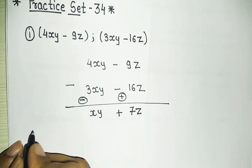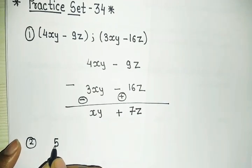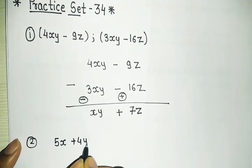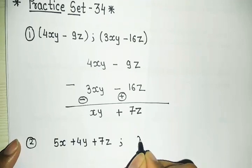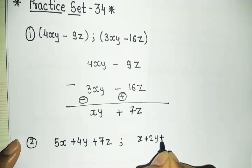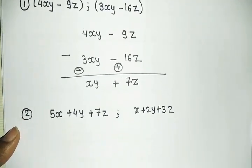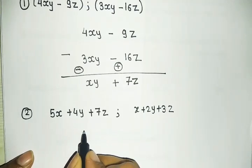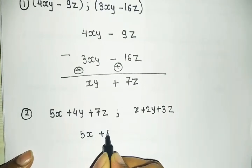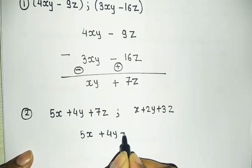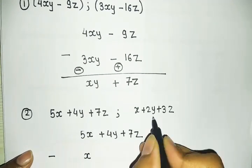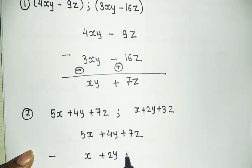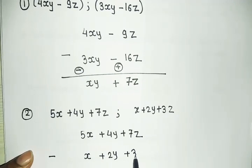My second example: the first expression is 5x plus 4y plus 7z, and the second expression is x plus 2y plus 3z. We write 5x plus 4y plus 7z, and below it with a minus sign, we write x plus 2y plus 3z.